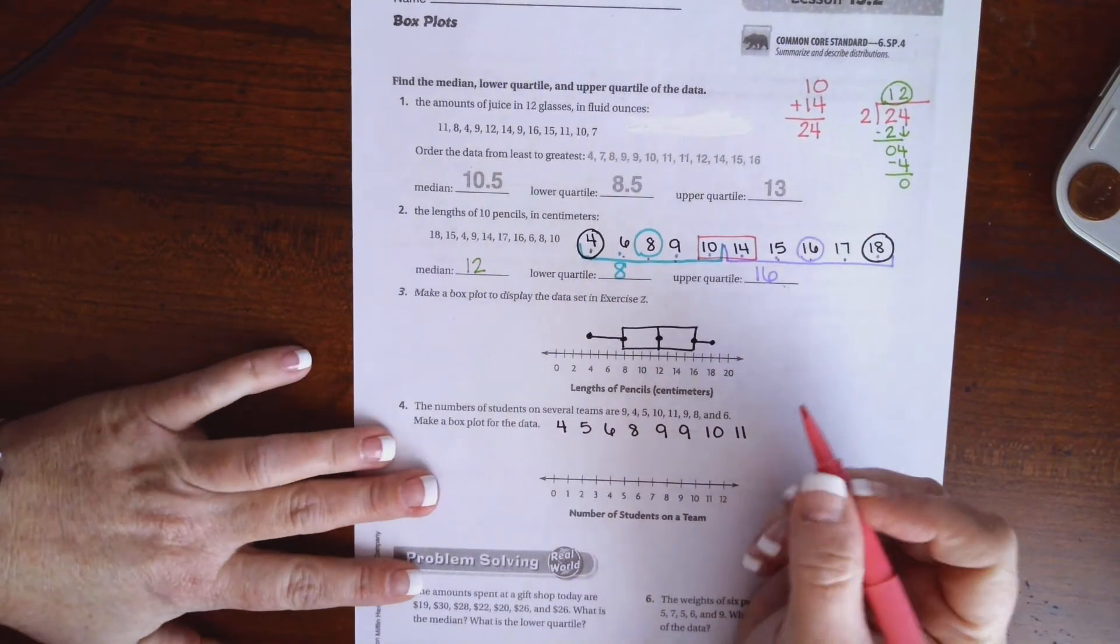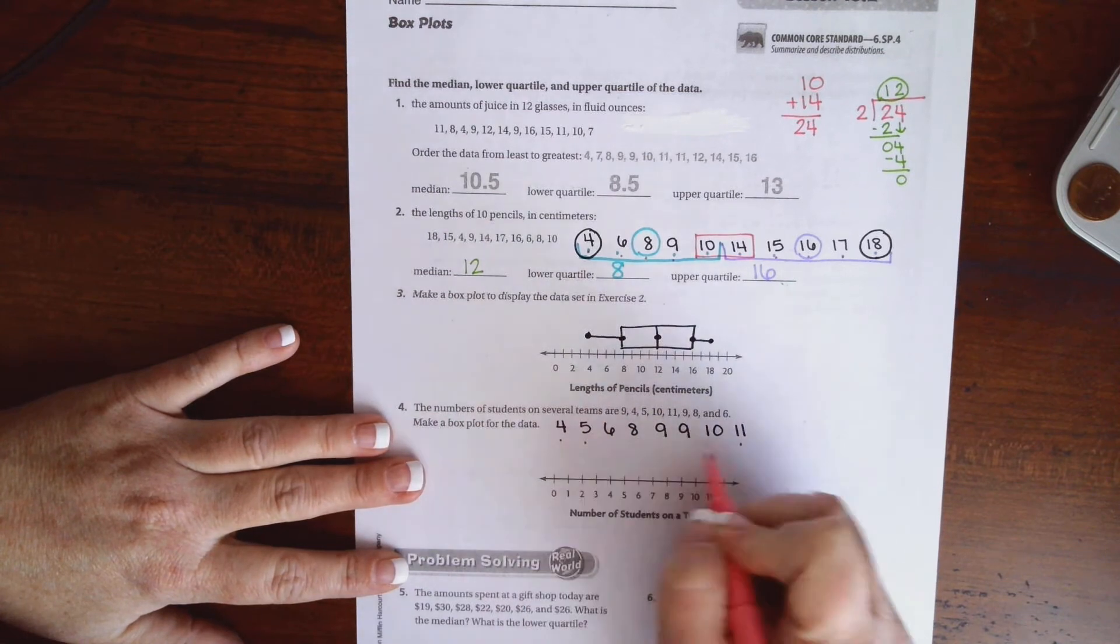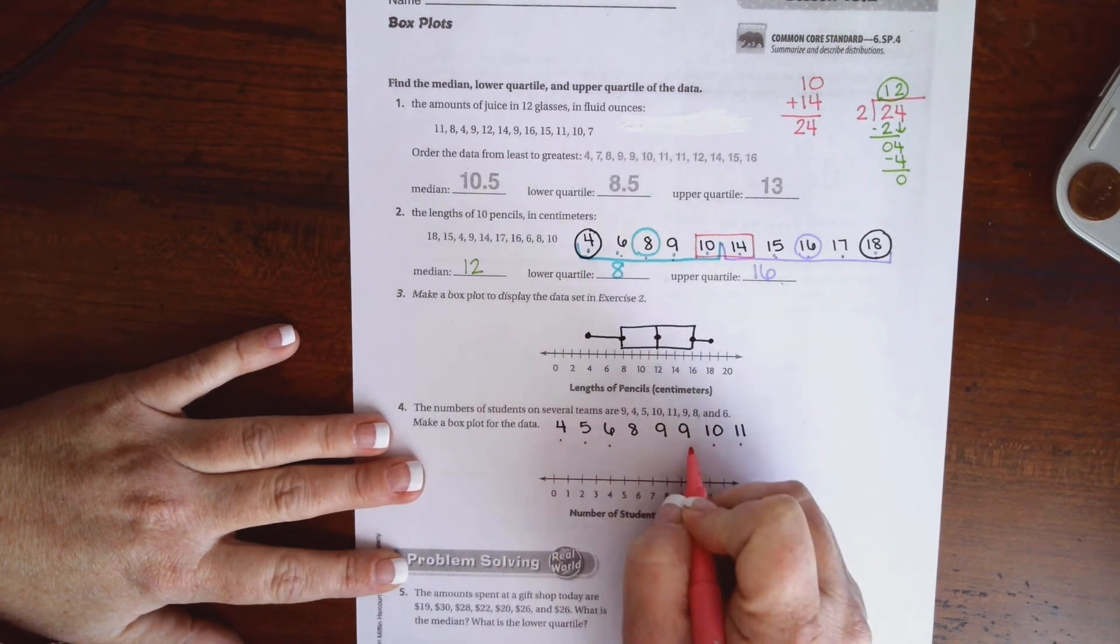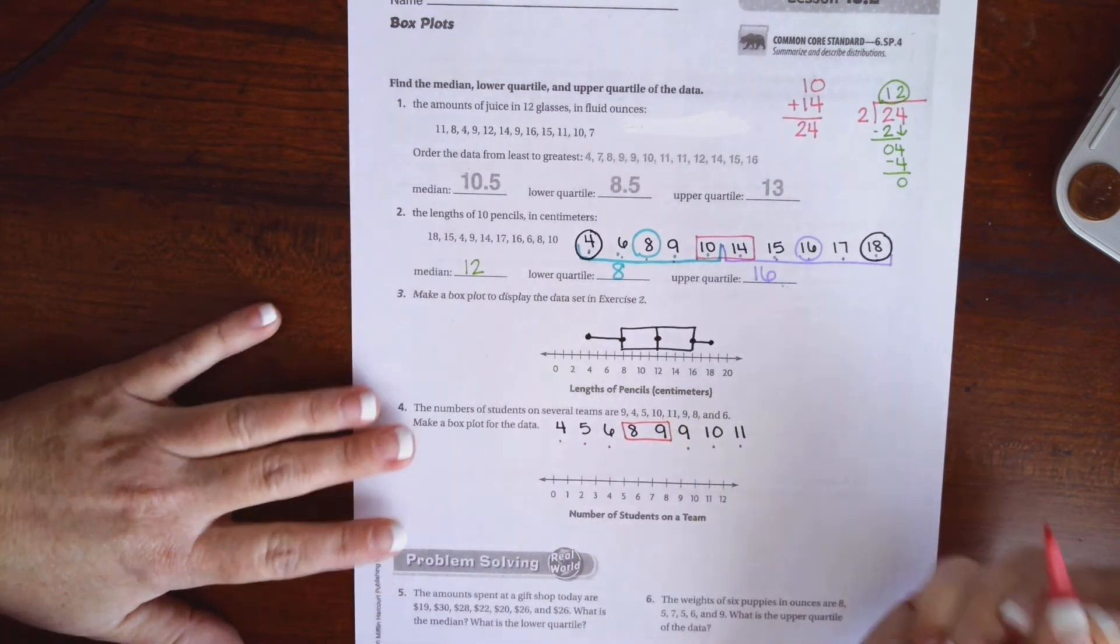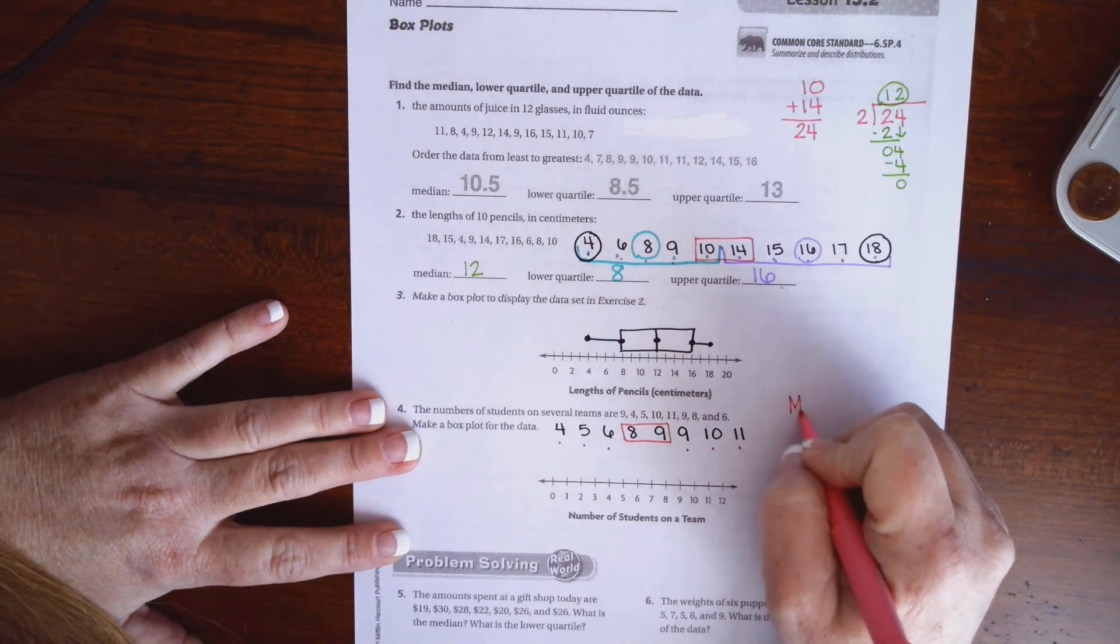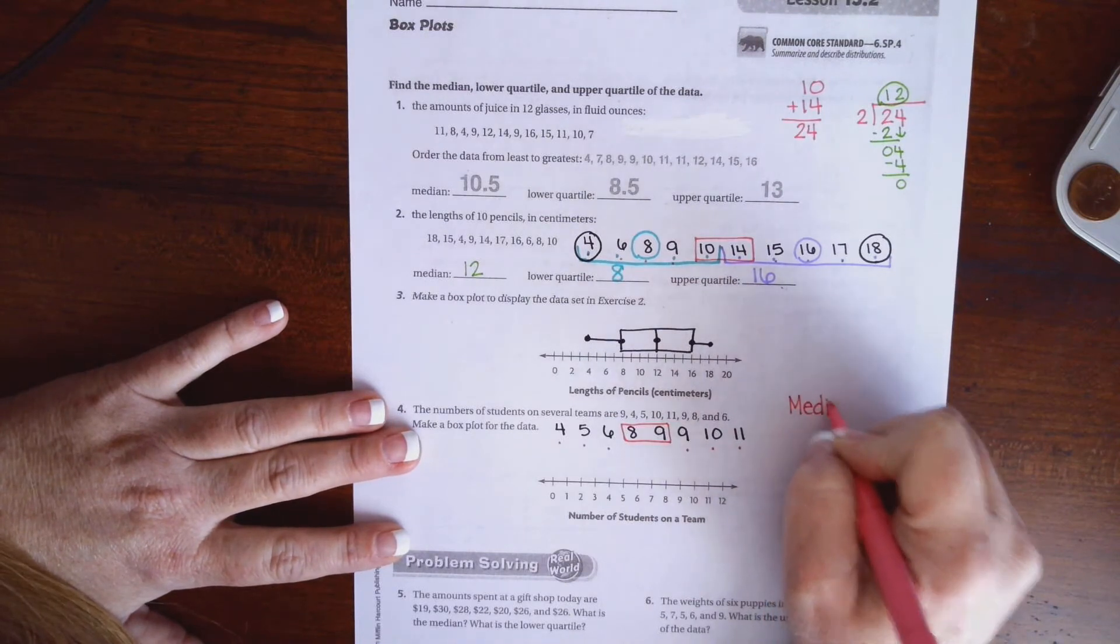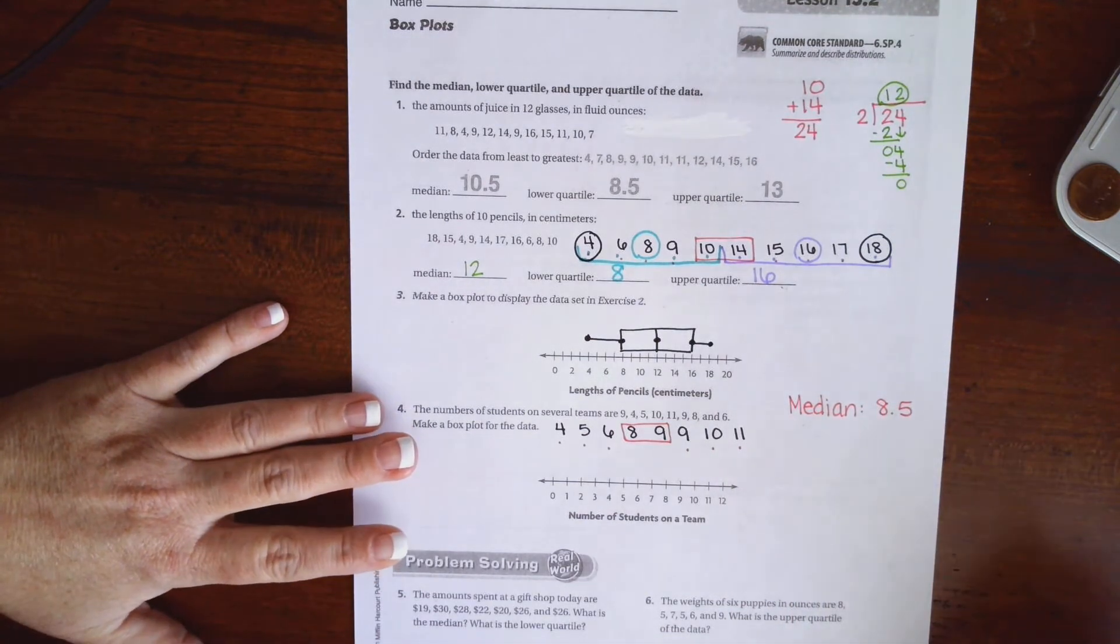We are going to mark up until we get to our middle number. So my middle is 8 and 9. Well, I know smack in the middle of 8 and 9 is 8 and a half. So over here I'm going to write my median. It's going to be 8.5, which is the same thing as 8 and a half.